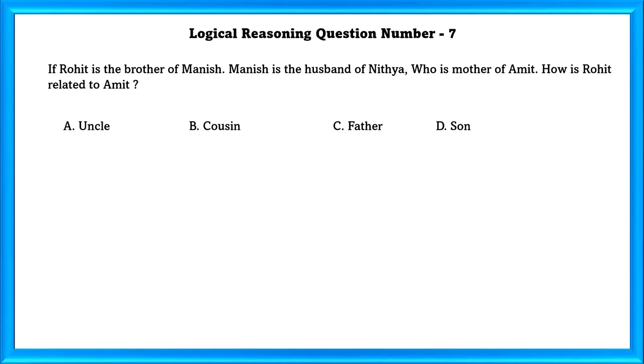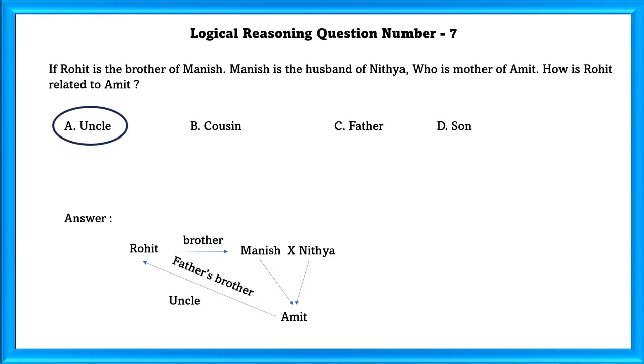Logical Reasoning Question Number 7: If Rohit is the brother of Manish, Manish is the husband of Nitya, who is the mother of Amit. How is Rohit related to Amit? Rohit's brother is Manish, Manish's wife is Nitya, and Nitya's son is Amit. So Rohit will be uncle to Amit.